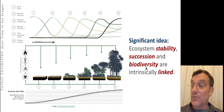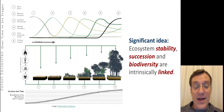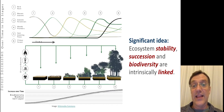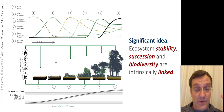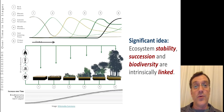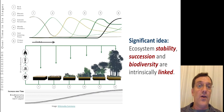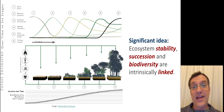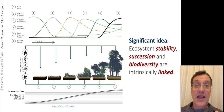Biodiversity and stability are intrinsically linked. The more diverse an ecosystem is, the more stable it is, and the more resilient it is. We'll get into the reasons for that and actually start to measure some of those components in this topic in more detail a little bit later on.